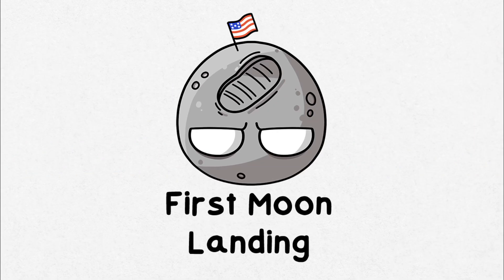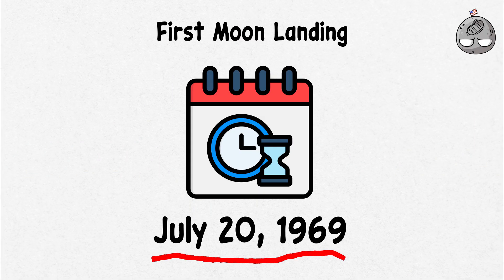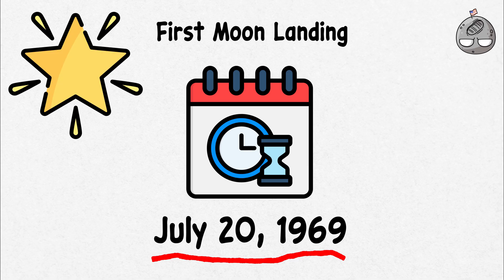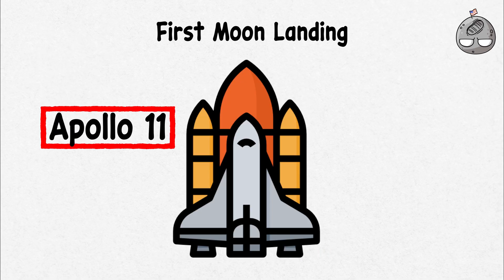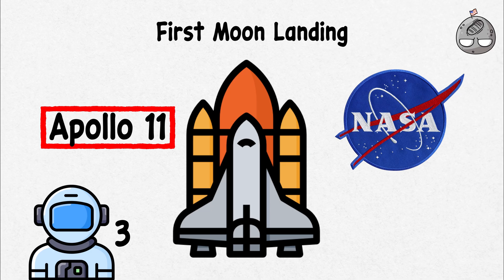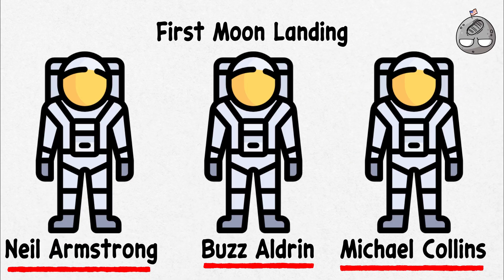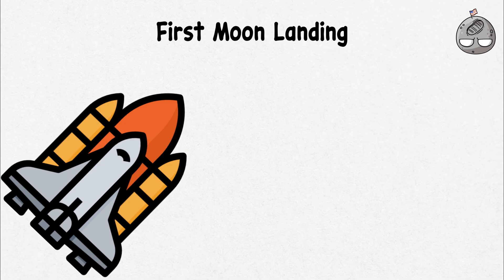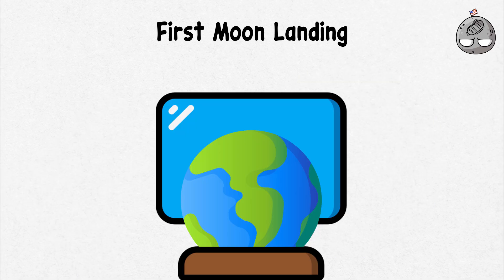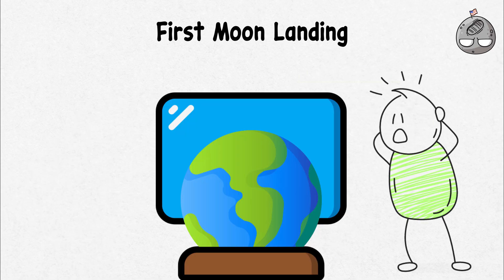First moon landing. On July 20th, 1969, something truly extraordinary happened. Apollo 11, a spacecraft from NASA, carried three brave astronauts, Neil Armstrong, Buzz Aldrin, and Michael Collins, on an epic journey to the moon. The world was glued to their screens, and people waited with anticipation.